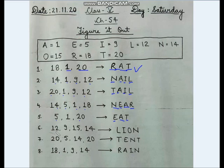Question number 6: the word made up by letters 12, 9, 15, 14 is called the king of beasts. Decoding: 12 is L, 9 is I, 15 is O, 14 is N. The answer is lion.